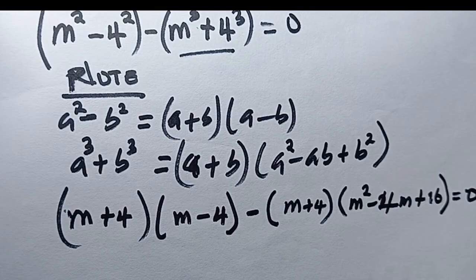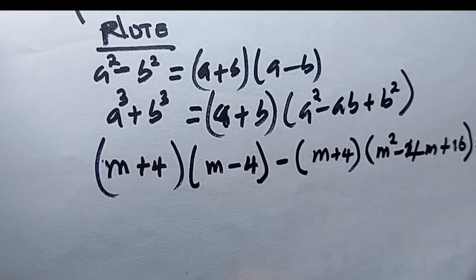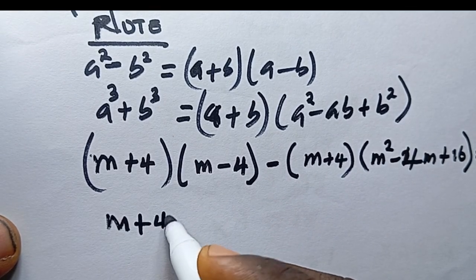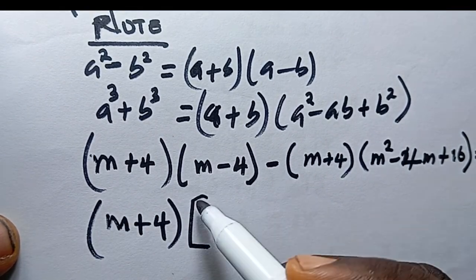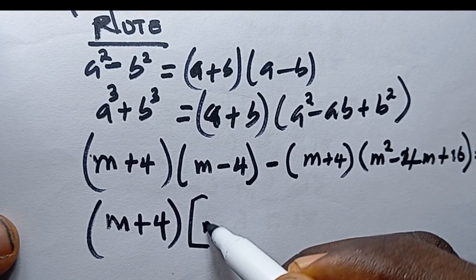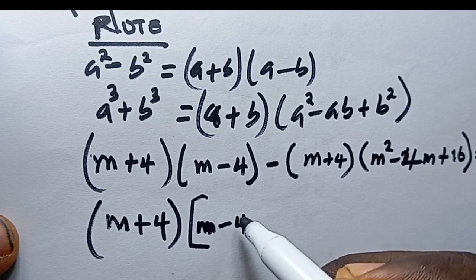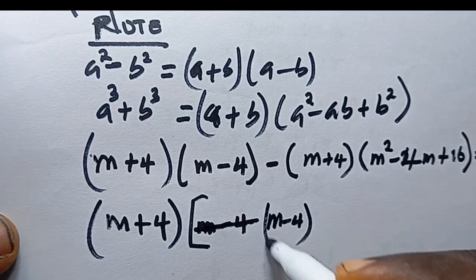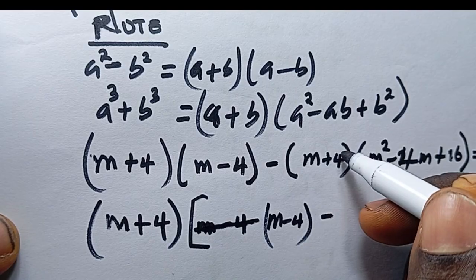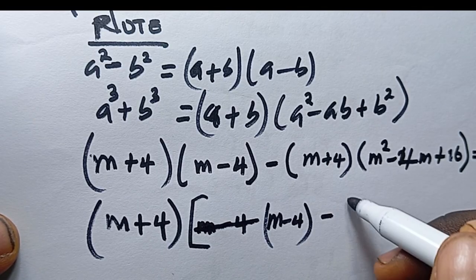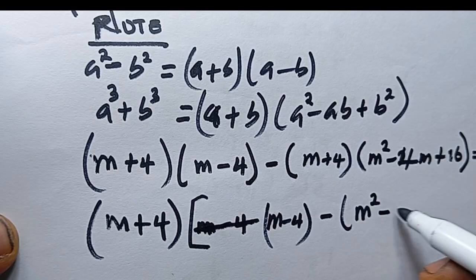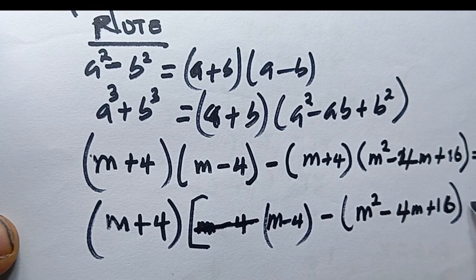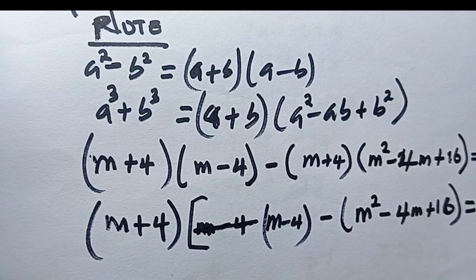You can see there are common terms — (m + 4) appears in both. So I'll factor that out. After factoring (m + 4) out, (m − 4) remains from the first part, and (m² − 4m + 16) remains from the second part. So it becomes (m + 4) times the quantity [(m − 4) + (m² − 4m + 16)] equals 0.